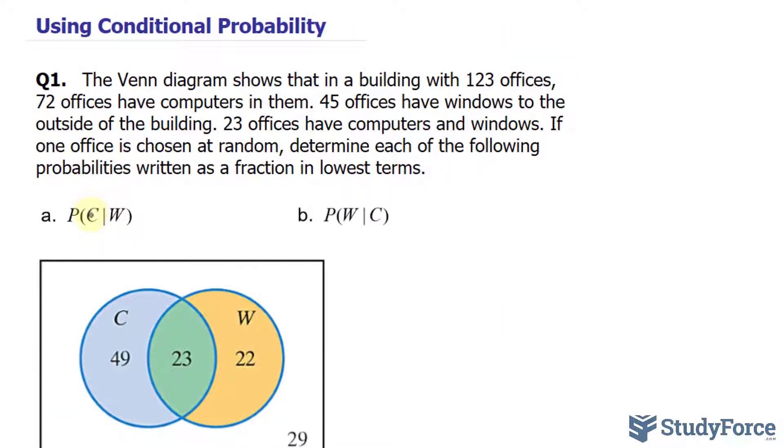In our case, they're asking for the probability of C given that we chose W. The number of offices that have windows, as spoken of in the question, is 45.